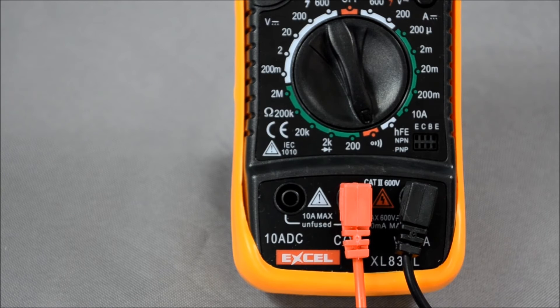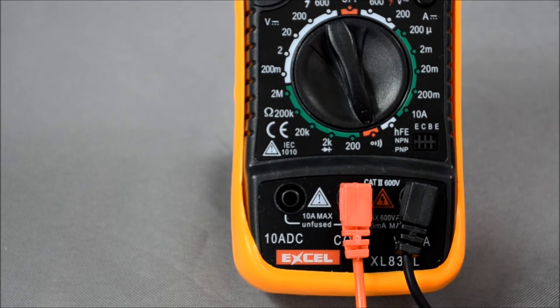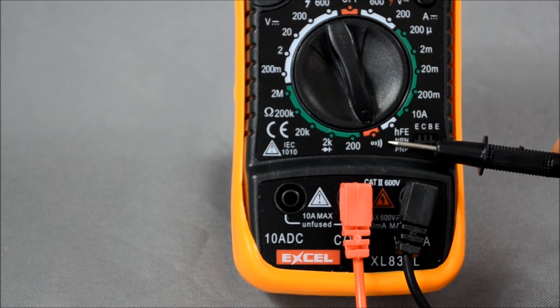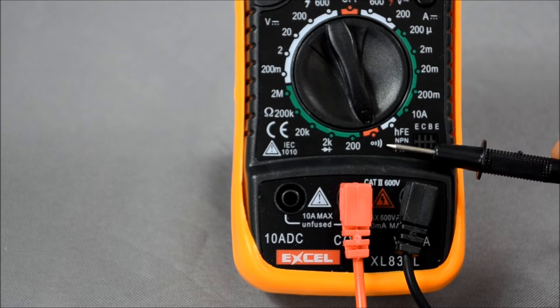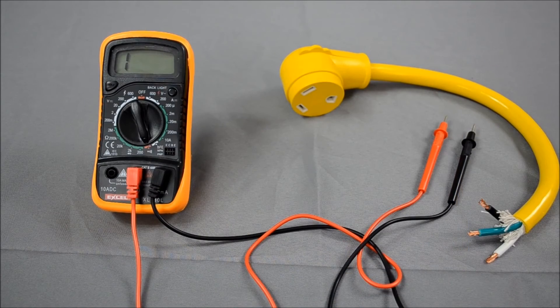To begin testing your power cord, get your multimeter out and make sure it's on the little sound wave setting here. This is going to make a noise when you have the pins in the correct locations.